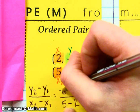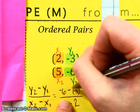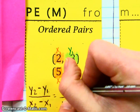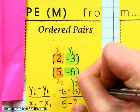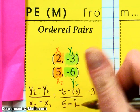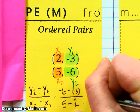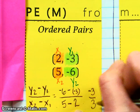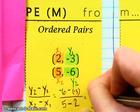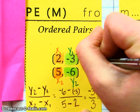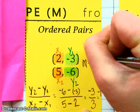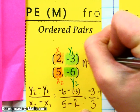So negative 6 minus negative 3, if you kiss your frog and make him into a prince, negative 6 plus positive 3 is actually a negative 3. And then 5 minus 2 is 3. And if we simplify this to lowest terms, we get negative 1. So our slope for this particular one, or this set of ordered pairs, is negative 1.